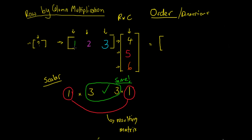Now we can start multiplying. To do this, we take the first row and slowly move across it, taking terms from the first row and the first column and multiplying them by the corresponding entries in the second matrix. We take our first row, first column and multiply it by the first row, first column of our second matrix. So for our first number, we're going to have 1 multiplied by 4.